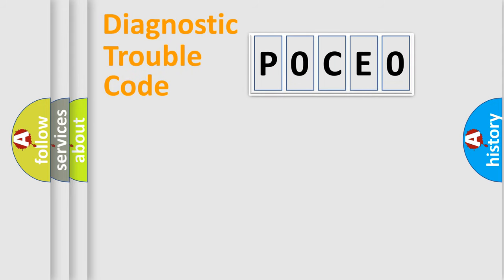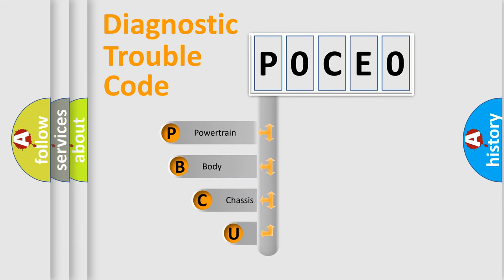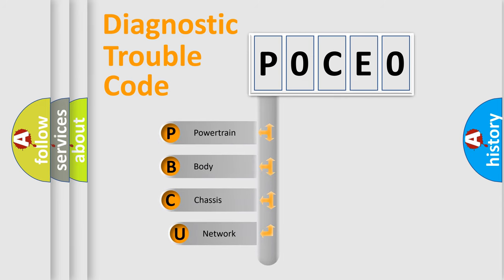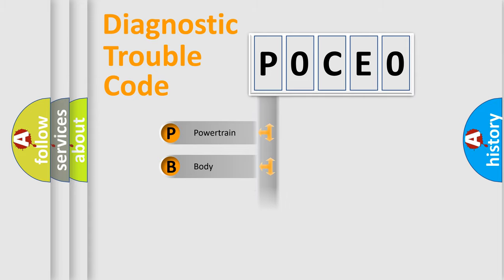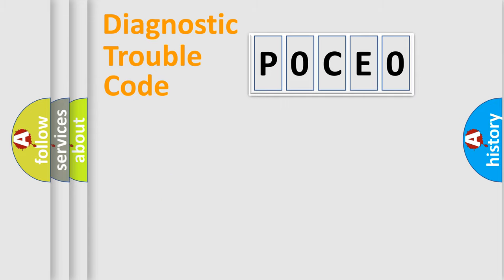First, let's look at the history of diagnostic fault code composition according to the OBD2 protocol, which is unified for all automakers since 2000. We divide the electric system of an automobile into four basic units: Powertrain, Body, Chassis, and Network. This distribution is defined in the first character of the code.